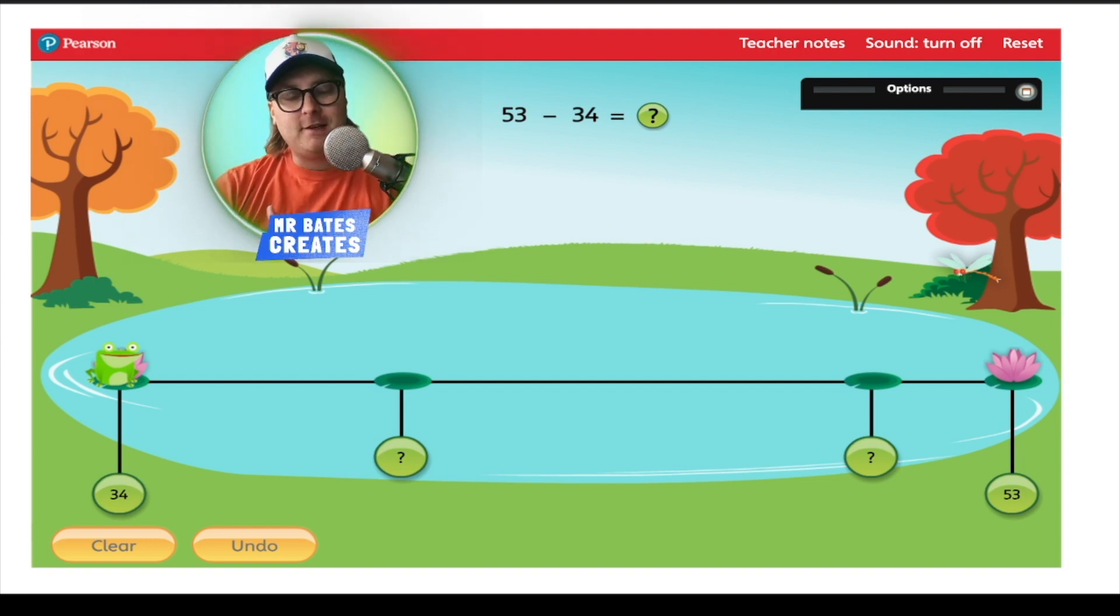Now, we need to get to 53, so we need to do some frog jumps to get there. The way that we frog jump up is we jump to the next 10. Once we get to the next 10, we can then jump in 10s until we get close enough to the number that we need to get to. So, 34 to the next 10, 34 using our number bonds, 6 and 4. Well, that would be 40, the next 10 after 34, which gives us a jump of 6.